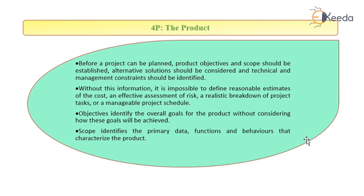Without this information, it is impossible to define reasonable estimates of cost, effective assessment of risk, a realistic breakdown of project tasks, or a manageable project schedule. So all the scope and objective definition is required before project scheduling is done. The project is broken down into parts which leads to manageable project scheduling. Objectives identify the overall goals for the product without considering how these goals can be achieved. Scope identifies the primary data, functions, and behavior that characterize the project product.